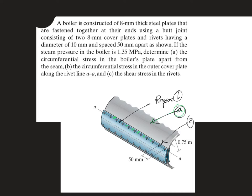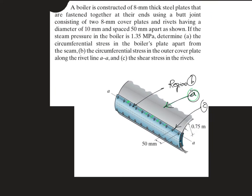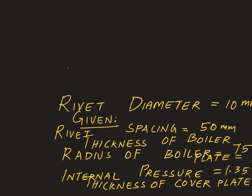First, a quick check: compute the r/t ratio. In this case, r/t = 750 divided by 8, which is pretty large compared to 10. Since the r/t ratio exceeds 10, we can assume that all equations valid for a thin-walled pressure vessel hold true in this scenario — a good green signal to go ahead.